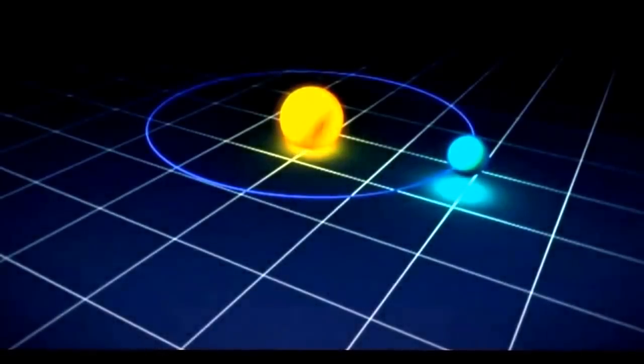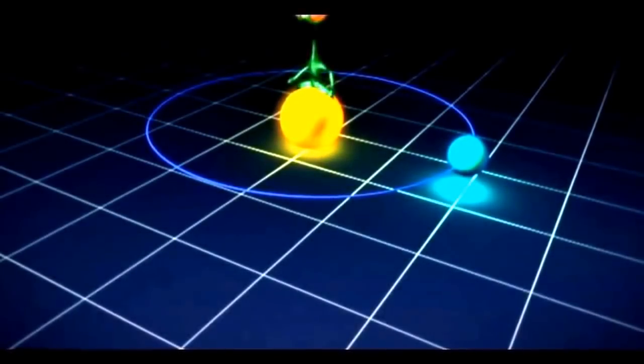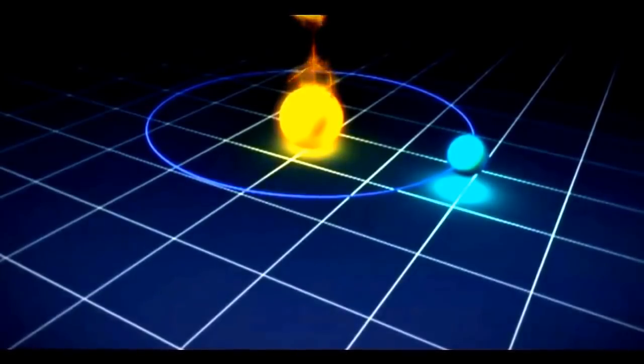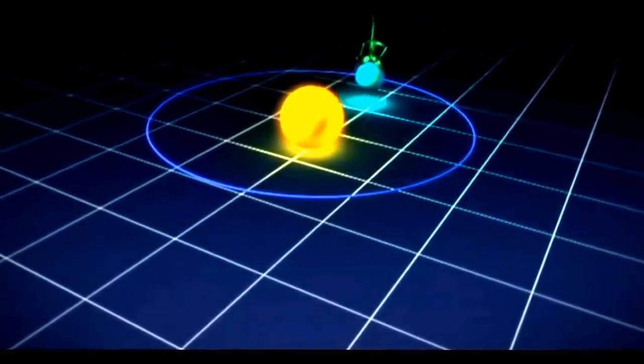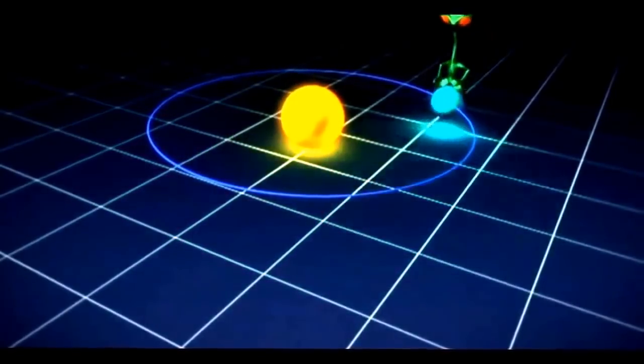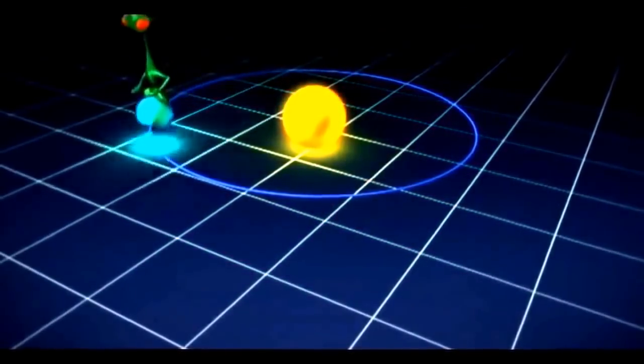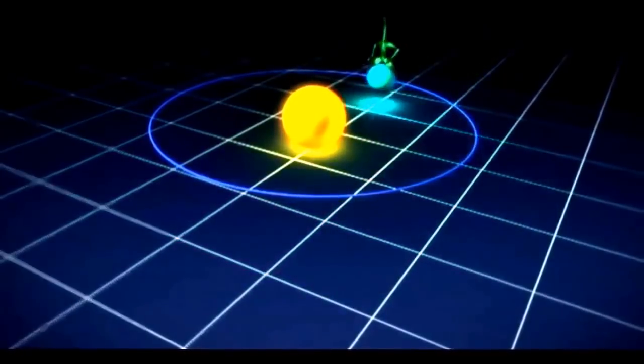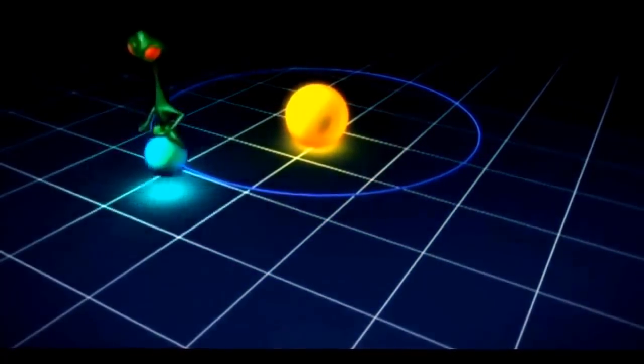Hewish thought as follows: aliens are unlikely to be living right on a burning star like the sun. They would be living on a planet orbiting that star. And there was a perfect way to test whether the pulses did or did not come from such a source.